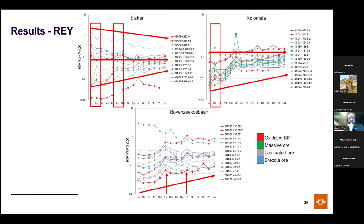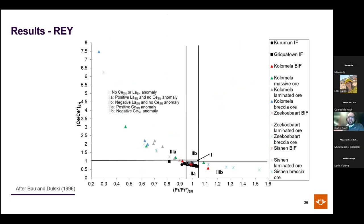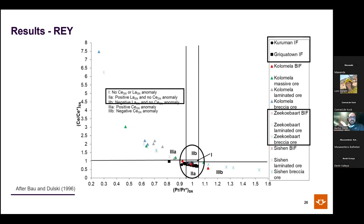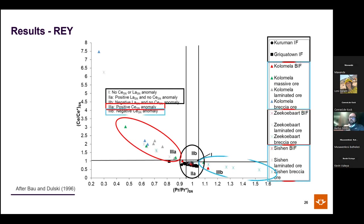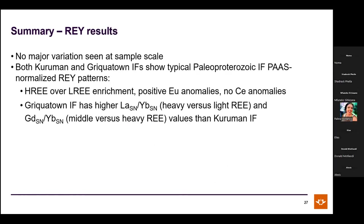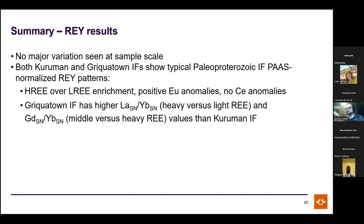Also interesting: both Sishin and Colomela develop positive and negative cerium anomalies, meaning cerium has preferentially been mobilized in these ore-forming environments — whereas the Kuruman and Griquatan iron formations and Boven-Seekwibart samples show no cerium anomalies. At the sample scale, there is no meaningful difference between laminae within the same sample or between breccia matrix and clasts.